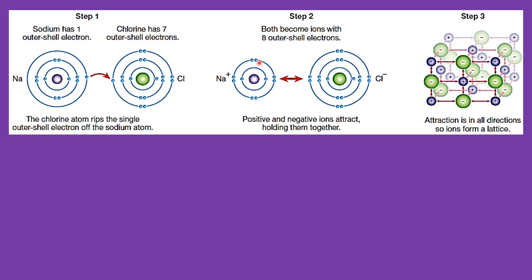Since sodium loses an electron, it became a positively charged ion. While chlorine gained an electron, so it became a negatively charged ion. Positive and negative ions attract, holding them together. Both sodium and chlorine need to attain 8 electrons in their valence shell to become stable or unreactive. The attraction in all directions forms a lattice.